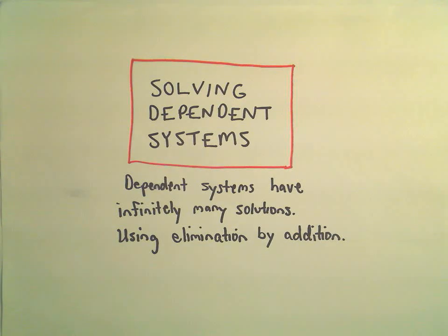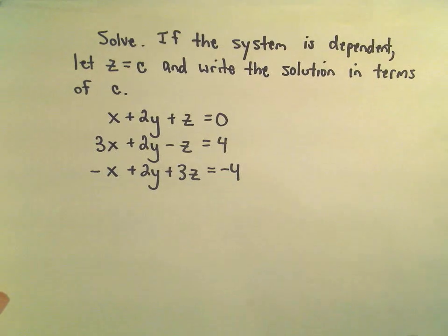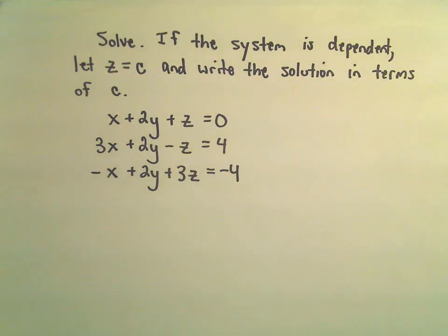Alright, in this video I'm going to do an example of solving a dependent system. We're going to use elimination by addition. So here it says solve. If the system is dependent, let z equal c and write the solution in terms of c. We've got x plus 2y plus z equals 0, 3x plus 2y minus z equals 4, negative x plus 2y plus 3z equals negative 4.